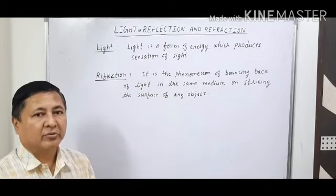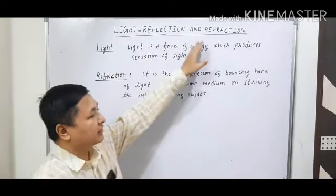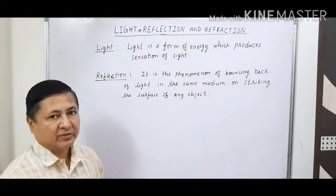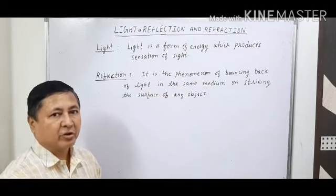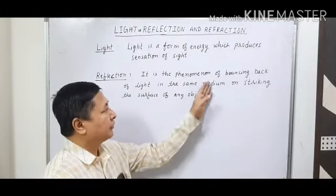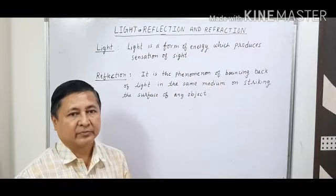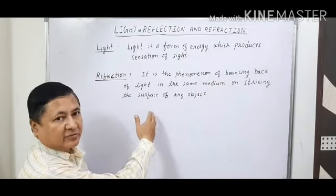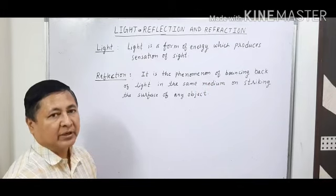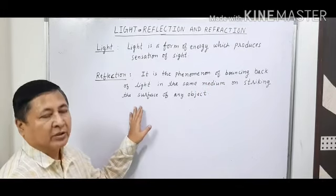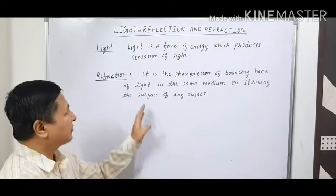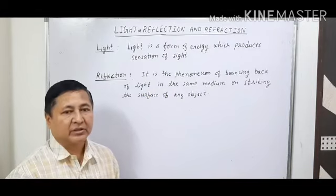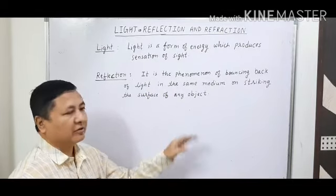Now there are many phenomena related to light — reflection and refraction. Today we are going to talk about reflection. What is reflection? It is a phenomenon of bouncing back of light. When the light falls on an object, it is bounced back in the same medium, and this is known as the reflection of light. So reflection of light is a phenomenon of bouncing back of light in the same medium on the surface of any object.